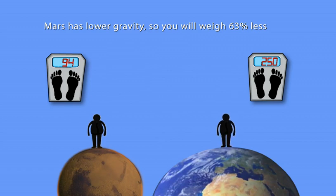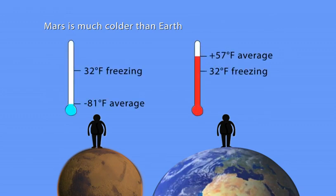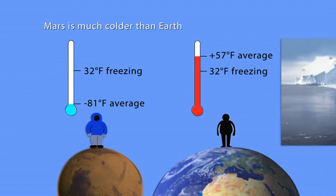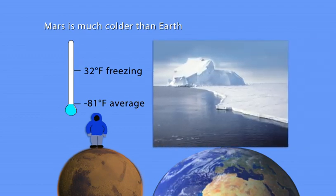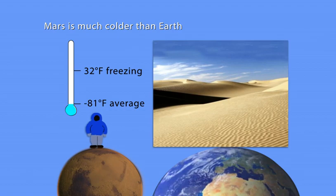It also means it will be easier to jump higher. Mars is much colder than Earth with an average temperature of minus 81 degrees Fahrenheit. That's over 100 degrees Fahrenheit below freezing. Mars, on average, is colder than the Antarctic and drier than the Sahara.